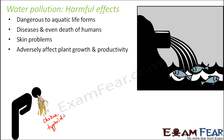Water pollution also adversely affects plant growth and productivity. Aquatic plants that are totally dependent on the water of a water body will die or not grow properly if the water is contaminated. Additionally, water used for irrigating fields often comes from nearby rivers or lakes. If that water is contaminated and used on crops, those plants will also not grow properly and their productivity will reduce.